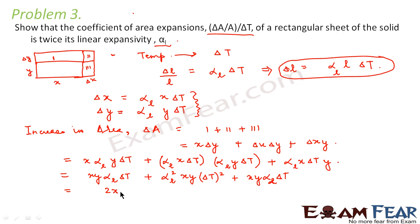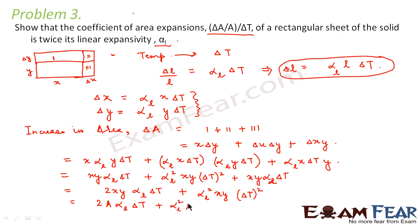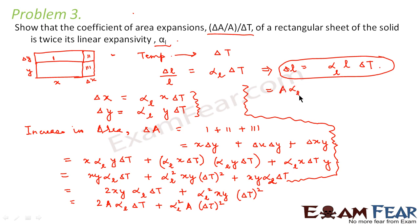This simplifies to 2XY alpha L delta T plus a small term involving alpha L squared delta T squared. Since alpha L delta T is very small, we can neglect that higher-order term, setting it to zero.